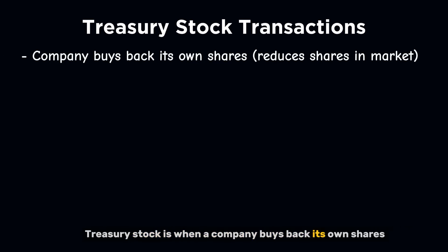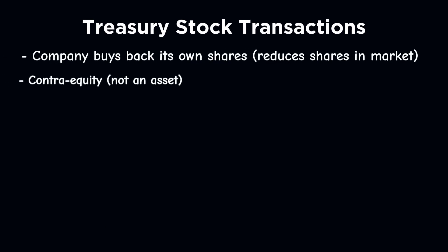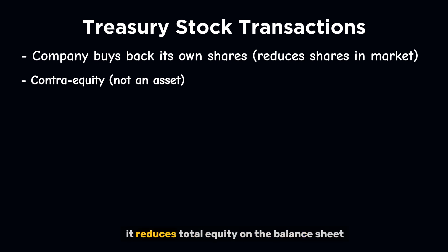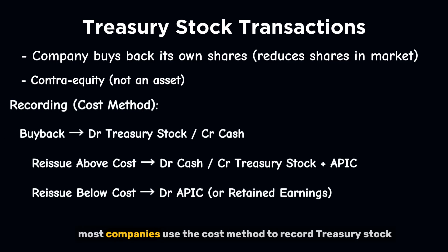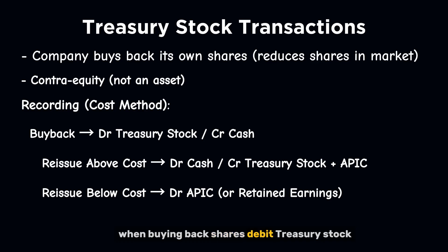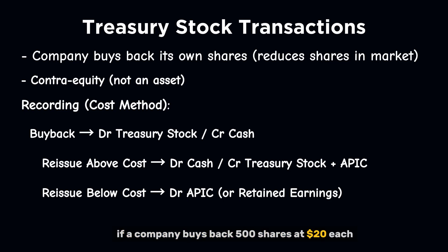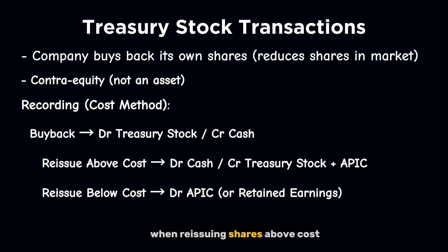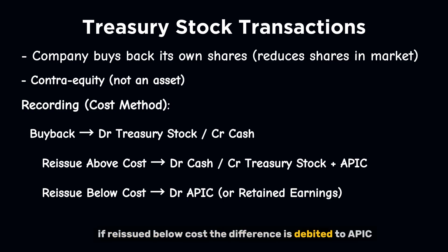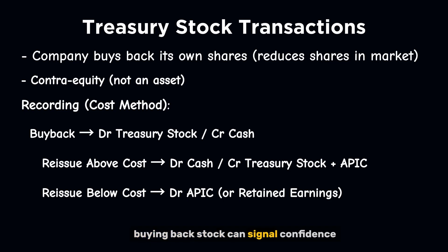Treasury stock is when a company buys back its own shares, reducing the number of shares available on the market. It's not an asset — it's a contra-equity account that reduces total equity on the balance sheet. Most companies use the cost method. When buying back shares, debit treasury stock and credit cash. Example: if a company buys back 500 shares at $20 each, debit treasury stock $10,000; credit cash $10,000. When reissuing shares above cost, debit cash; credit treasury stock; credit APIC. If reissued below cost, the difference is debited to APIC, or if APIC is exhausted, to retained earnings. Buying back stock can signal confidence, increase earnings per share, or prepare for stock-based compensation plans.